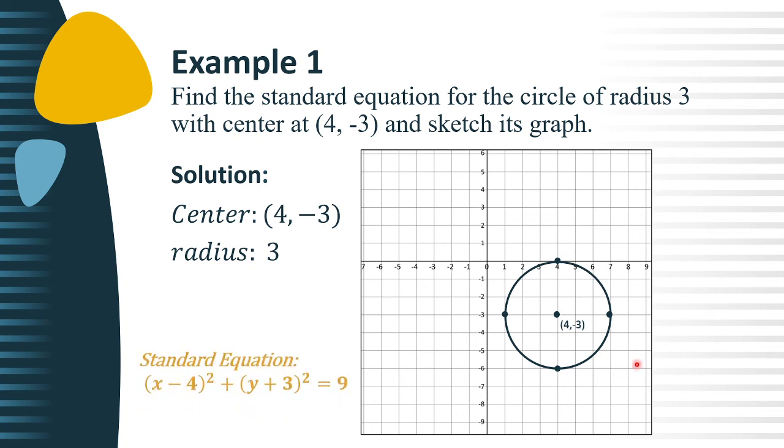This is now the graph of (x - 4)² + (y + 3)² = 9. So, we're finished.